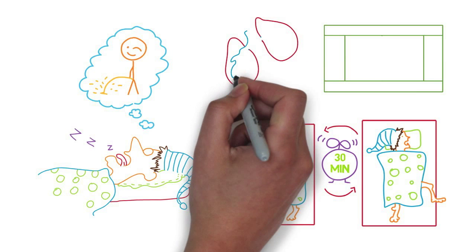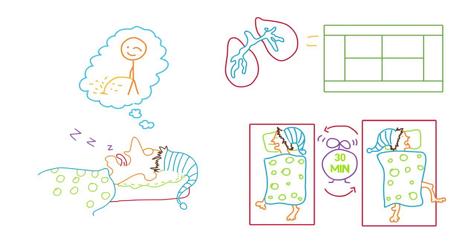Going deeper, if your lungs were open and flat, they would cover the size of a tennis court.